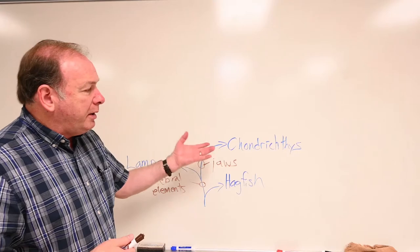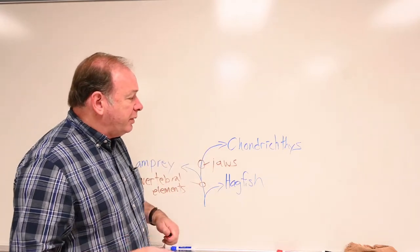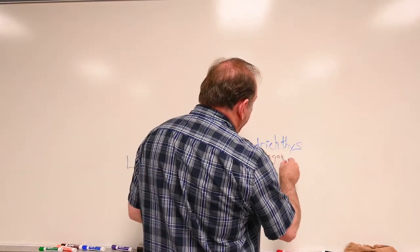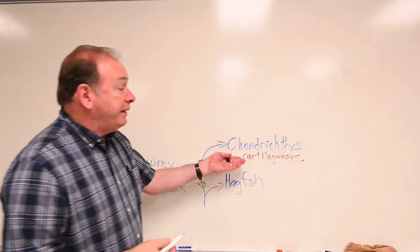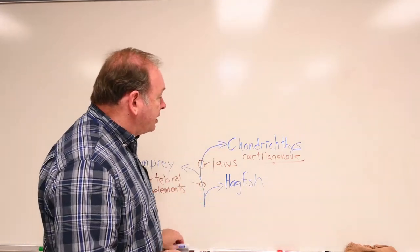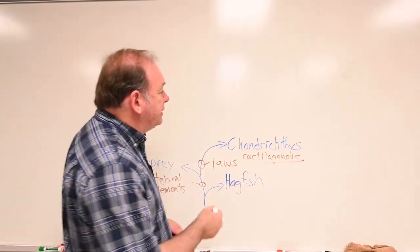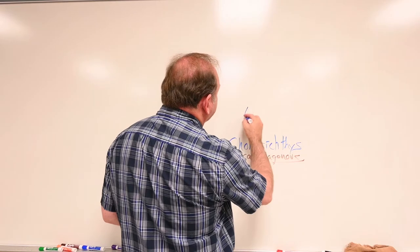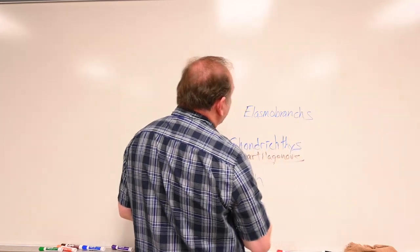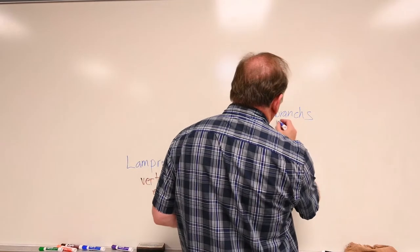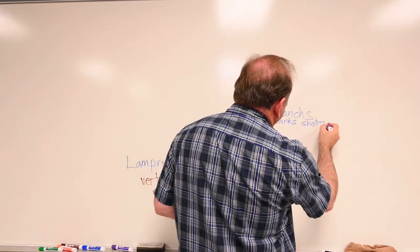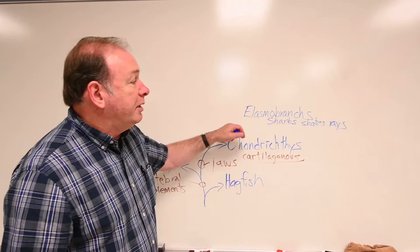Chondrichthian fish — there are two primary groups to discuss. We know these are cartilaginous fish because unlike higher fish, they do not have bone in their endoskeleton. Stemming from the chondrichthian lineage, we have two different types: elasmobranchs — which are your sharks, skates, and rays — and holocephalins.